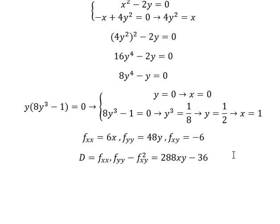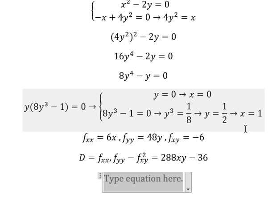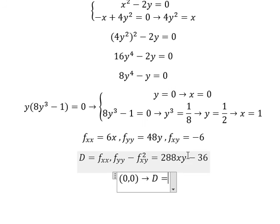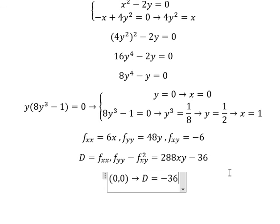Now we consider the point (0, 0). Substituting (0, 0) into D gives negative 36. Since negative 36 is less than 0, this point is a saddle point.